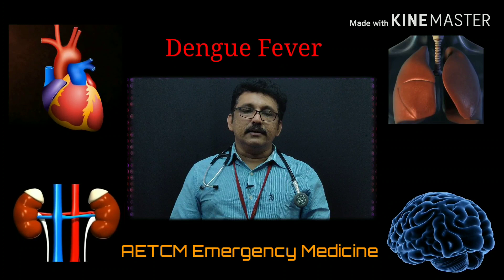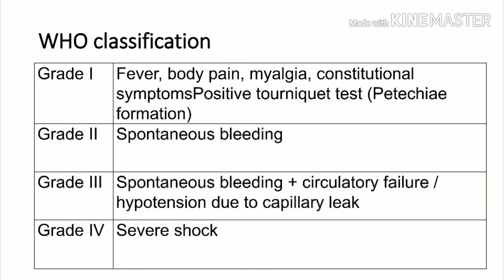According to WHO, there are 4 grades of dengue fever. Grade 1: fever, body pain, myalgia, constitutional symptoms, and petechial hemorrhages. Grade 2: spontaneous bleeding associated with Grade 1 symptoms. Grade 3: previous symptoms plus spontaneous bleeding with circulatory failure or hypotension due to capillary leak — where micropores in blood vessels cause leak, leading to intravascular volume loss and circulatory collapse. Grade 4: severe shock.